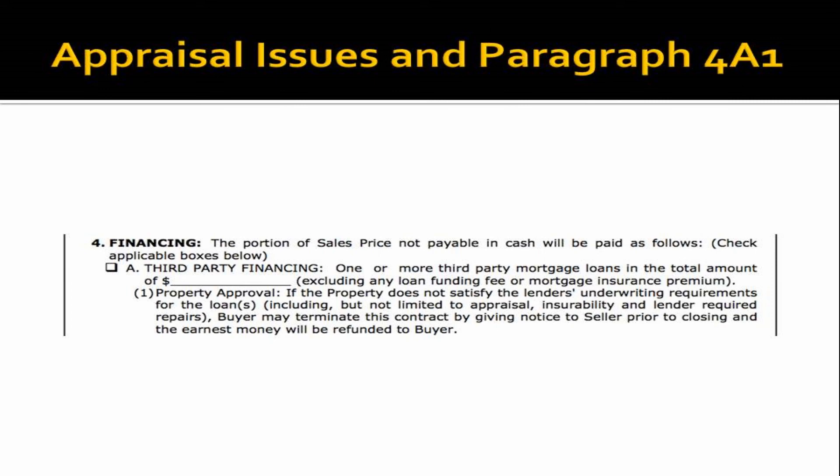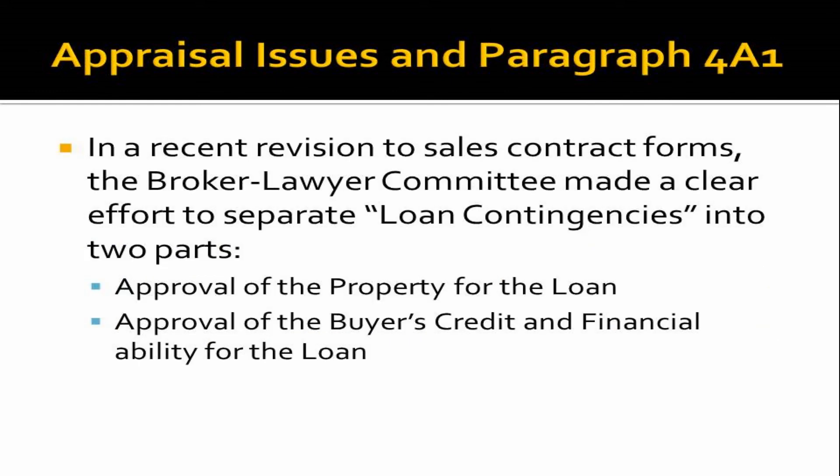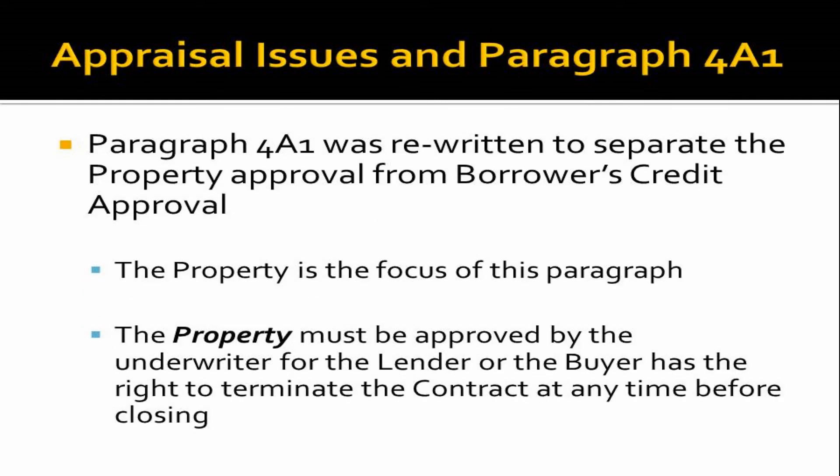Moving on to appraisal issues in paragraph 4A1. In a recent revision of 4A1, the Broker Lawyer Committee split the loan contingency into two parts: approval of the property for the loan, and approval of the buyer's credit and financial ability to handle the loan. That was an admirable clarification — in the past it was one jumbled mess, but now it's split into two parts. Specifically, paragraph 4A1 was rewritten to separate property approval from borrower's credit approval, and the property is the focus of paragraph 4A1.